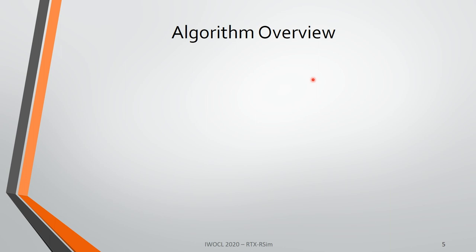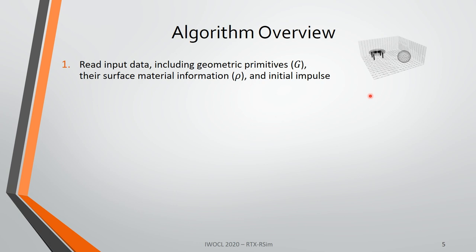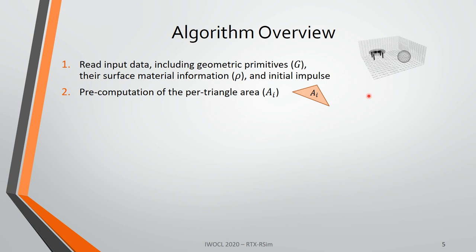Now, what's the actual algorithm that makes it possible to simulate this behavior? I won't go into too much mathematical detail — you can find references in the original paper — but I will look at the algorithm from a computational perspective and outline the major steps relevant for our accelerated implementation. The first basic step is reading in the input data, which includes the geometric primitives G, the surface material information rho, and some information about the initial impulse.